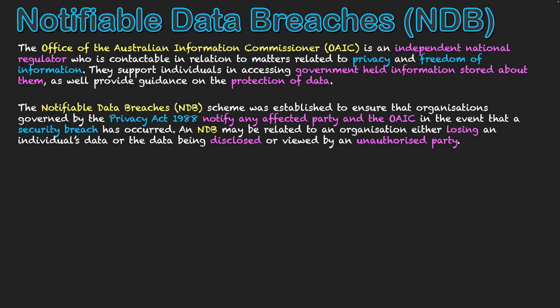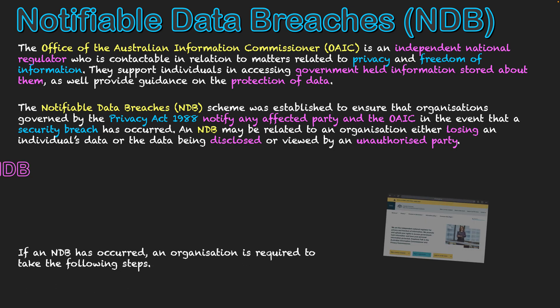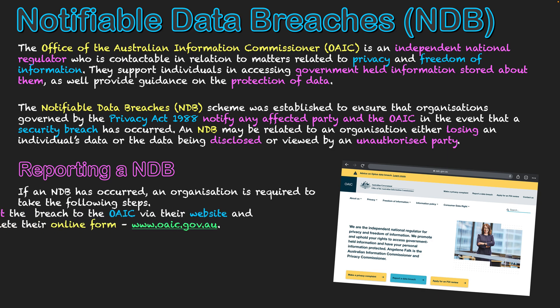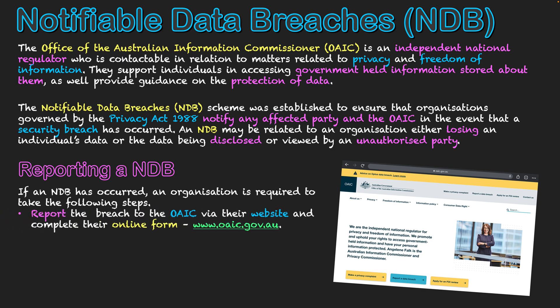They need to notify the OAIC and any affected party. So what does reporting an NDB involve? If an NDB has occurred, an organization is required to take the following steps. Firstly, they've got to make a report to the OAIC, and this can be done via their website, which you can see on the right here. They go to the website and fill in the online form — what date was it, what type of data was accessed, how many people might be affected, and a whole variety of things about that. So that needs to be reported to the OAIC.